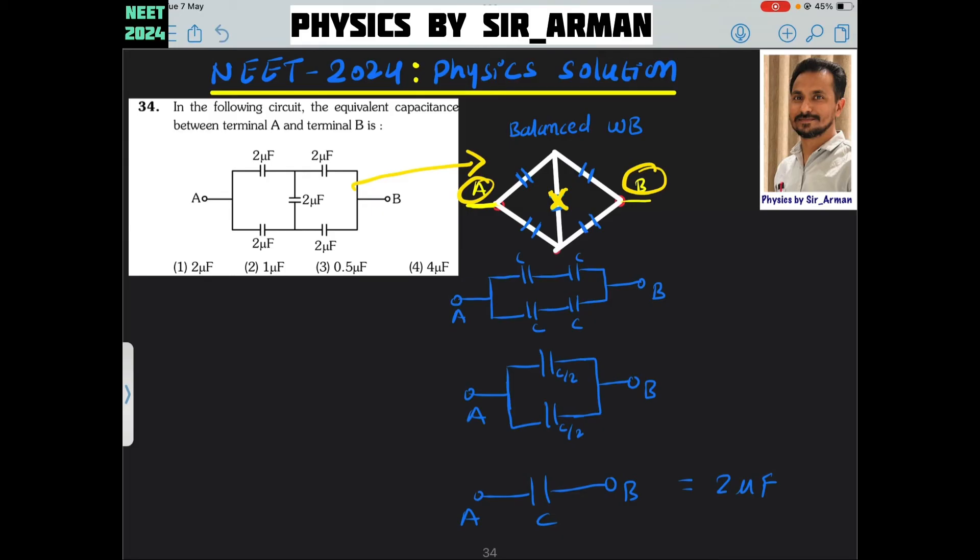For series combination it is 1 by C1 plus 1 by C2. It is C by 2, the resultant will be C by 2. Again these two are in parallel.